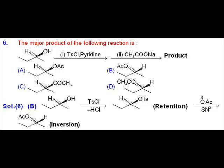In the first step, the OH group is treated with tosyl chloride and we are getting an OTs product. After that, when sodium acetate is used, an SN2 reaction is conducted and inversion is taking place.